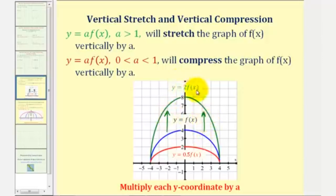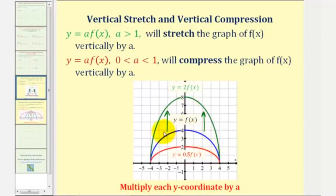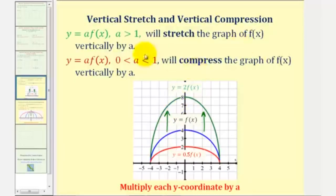The reason it's vertically stretched is because, in order to find the corresponding points on two times f of x, we multiply each y coordinate of the basic function f of x by a, or in this case two. So because we're multiplying each y coordinate by two, we say this graph would be stretched vertically by two.